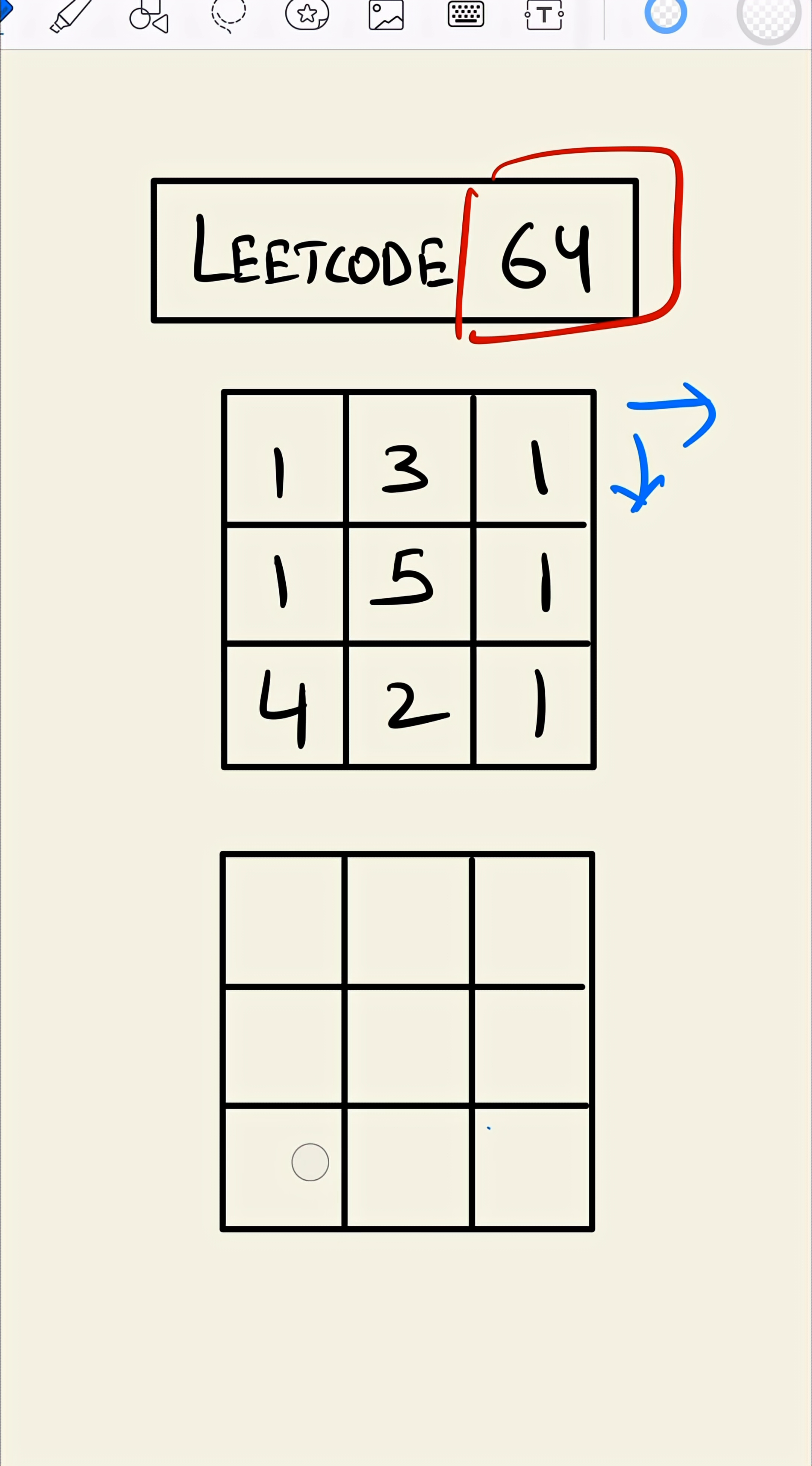Let's calculate that. So for first grid, for this one, this value plus minimum of from the left or from top. Since from left and top there is nothing, we'll put one here.